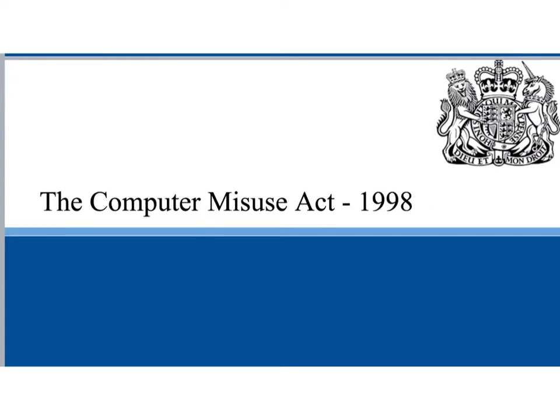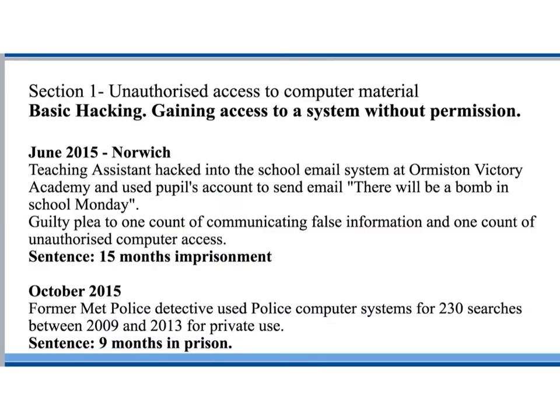The Computer Misuse Act covers the laws which were drawn up in order to protect personal data held by organisations or people from unauthorised access and modification. This law can be broken up into different sections. The first section is Section 1: unauthorised access to computer material.